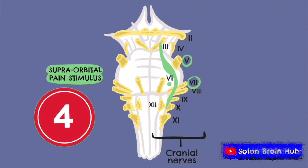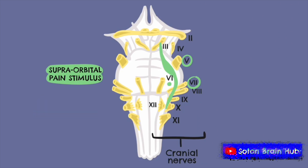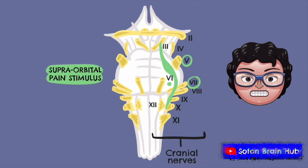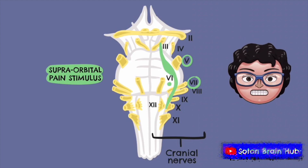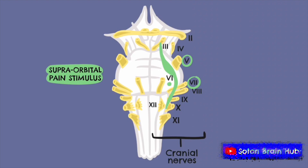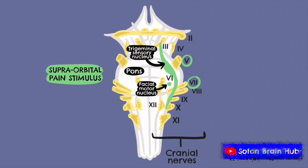Supraorbital pain stimulus: in this reflex, a painful stimulus is applied to the supraorbital ridge. Normally you would expect to see grimacing in the face, but in brainstem death there is again no response. The afferent nerve is the trigeminal nerve. The brainstem nuclei involved are the trigeminal and facial nuclei in the pons, and the efferent nerve is the facial nerve.